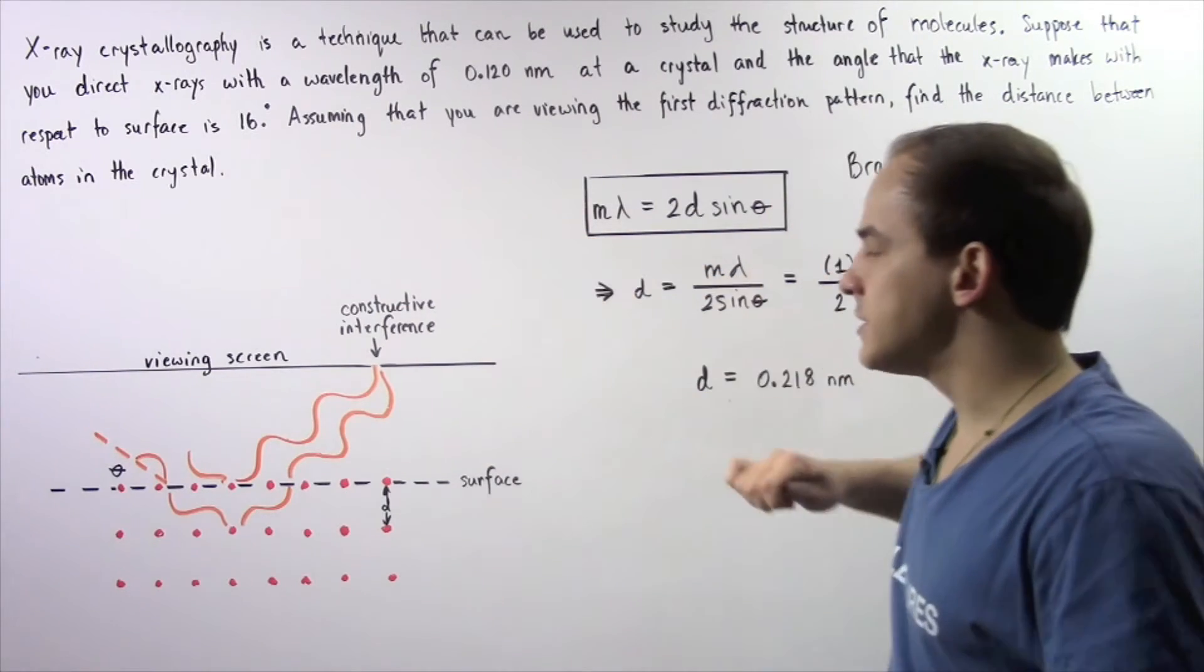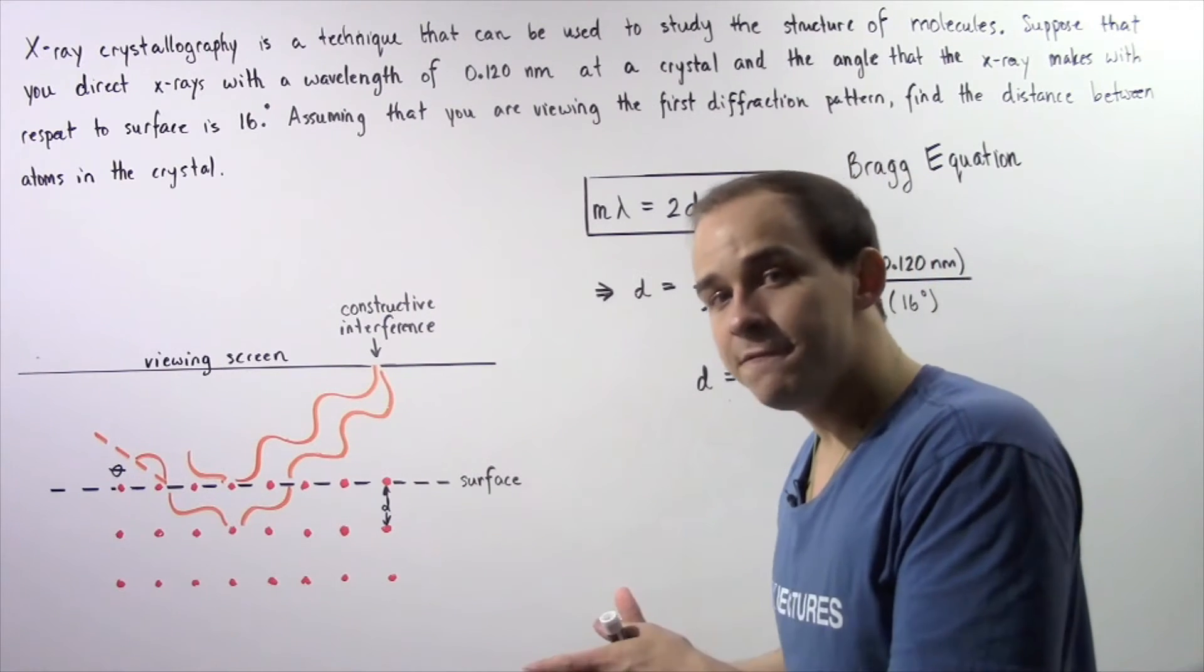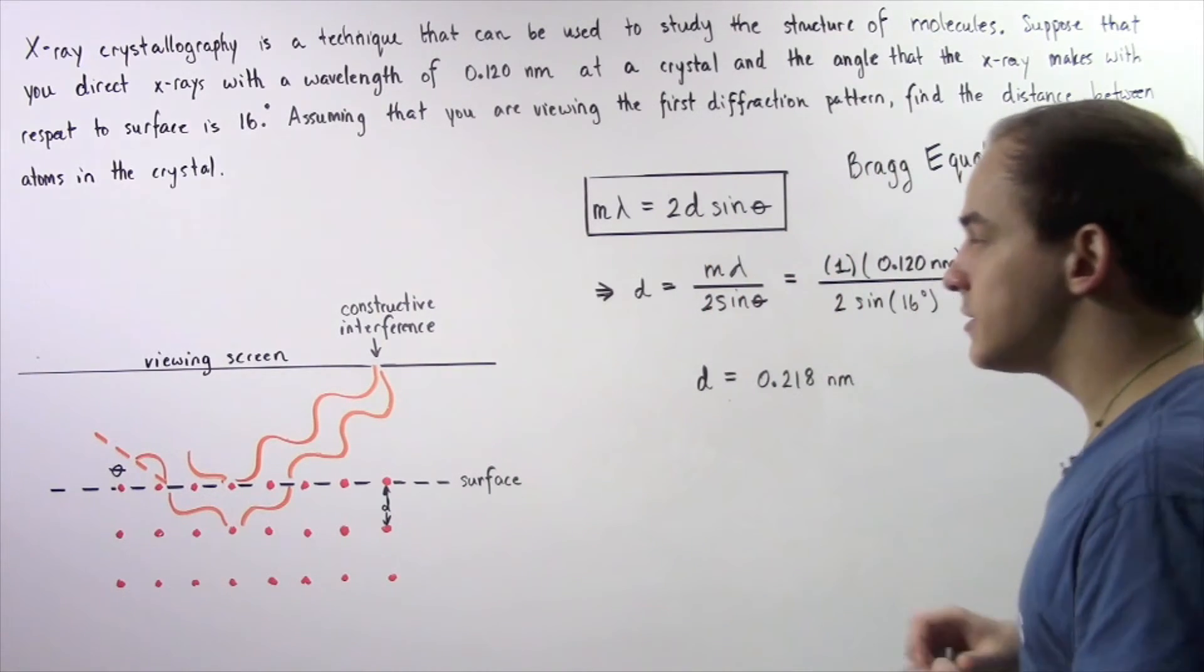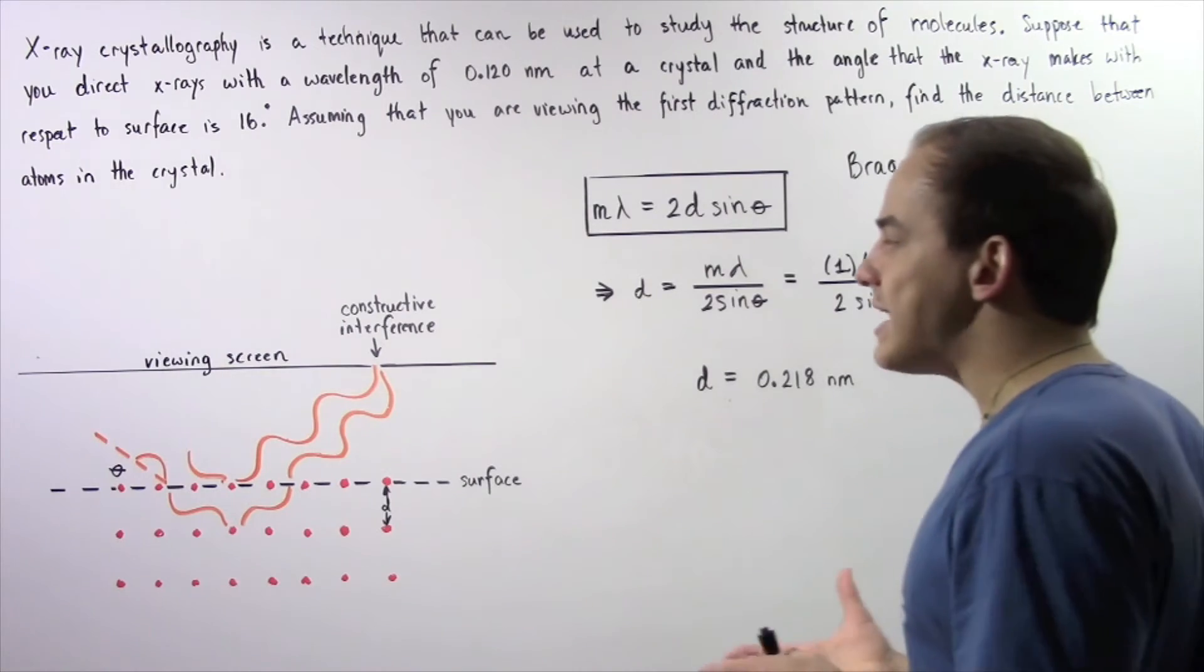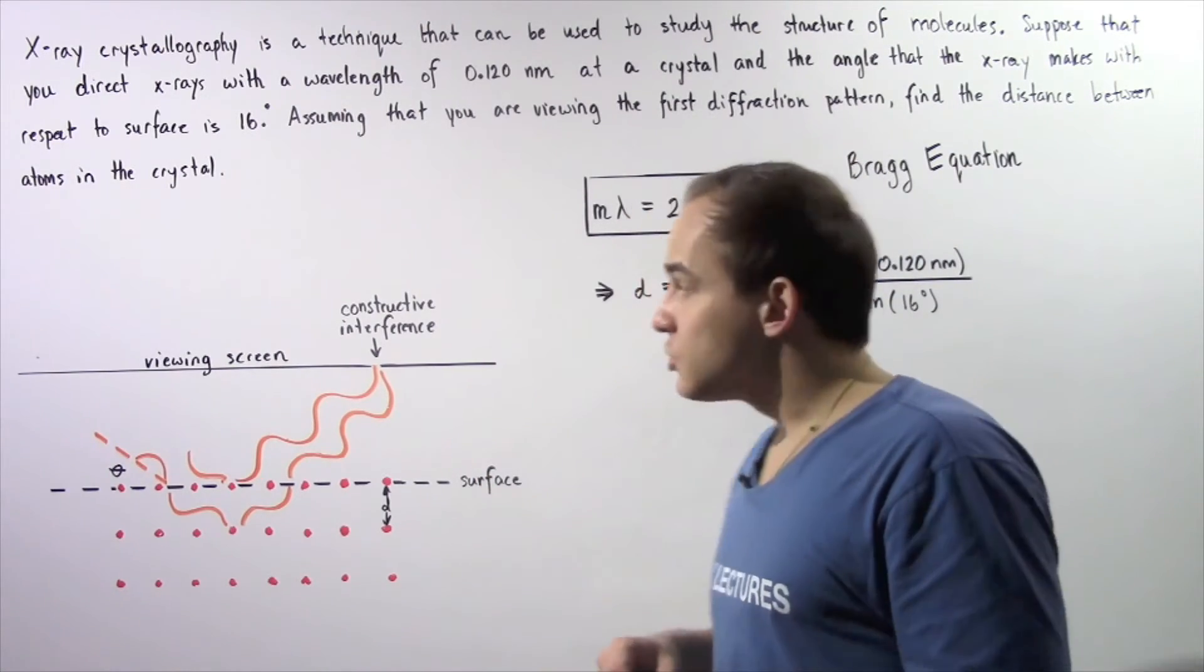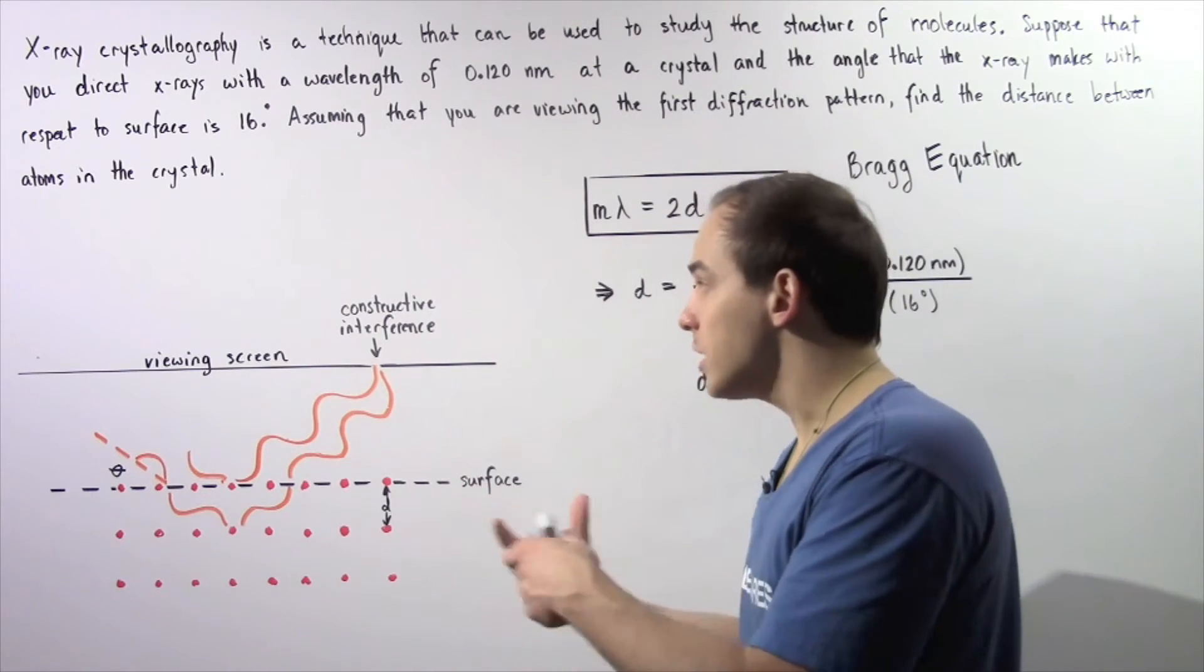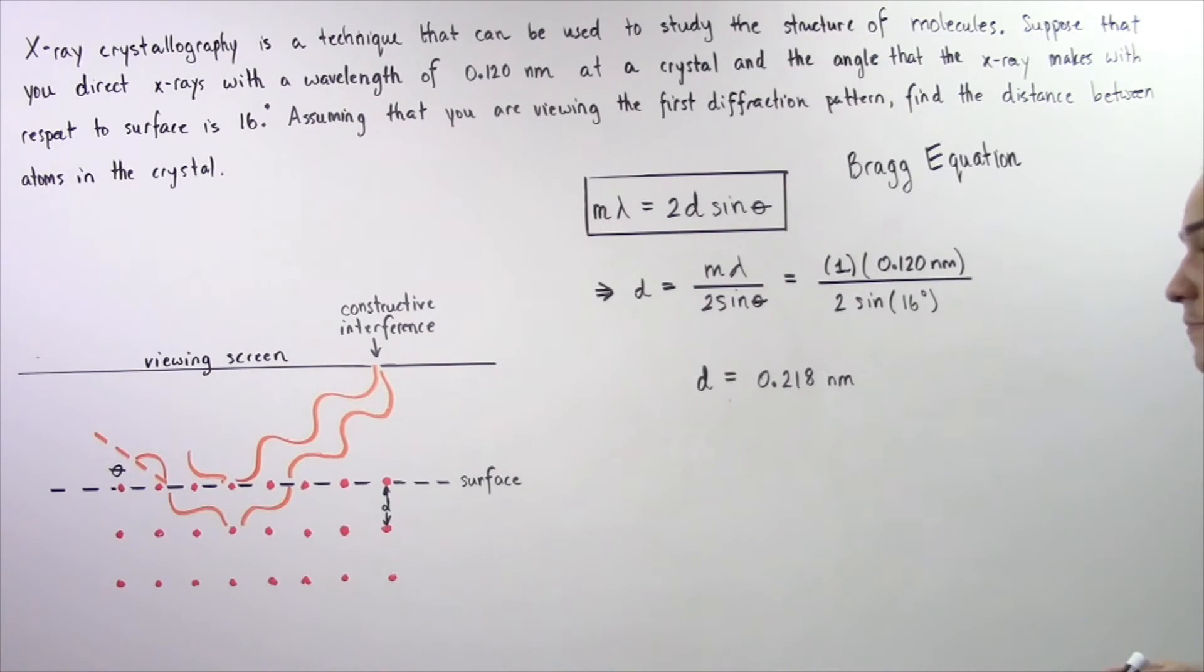Constructive interference is formed when the waves are completely in phase, and destructive interference takes place when our waves are completely out of phase. Constructive interference leads to bright fringes, and destructive interference leads to dark fringes.